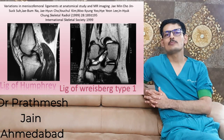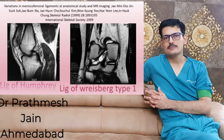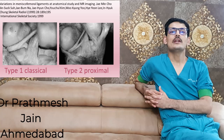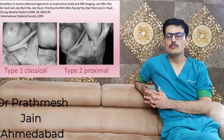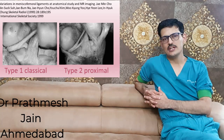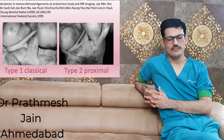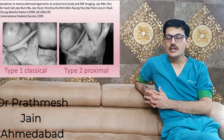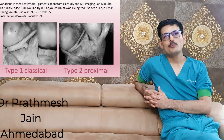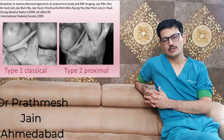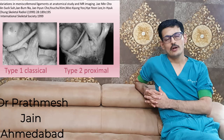The ligament of Wrisberg is more common. It is present in about 60 to 70 percent of patients. It is more stout, more rigid, and there are different pathological variations to this ligament of Wrisberg. It is also thicker. In some studies it has been shown to occur in close to 90 to 95 percent of cases.